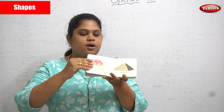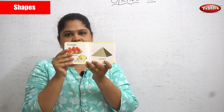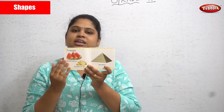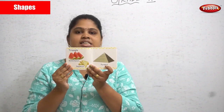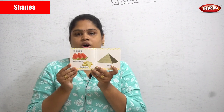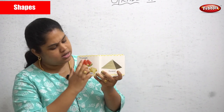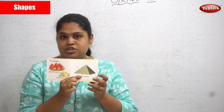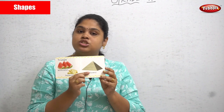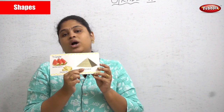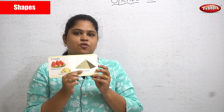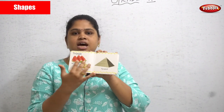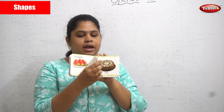Next is the triangle. Your favorite watermelon — when you cut it, it's in the shape of a triangle. A sandwich is in a triangle shape, and the pyramid in Egypt — one of the wonders of the world — is also a triangle shape.